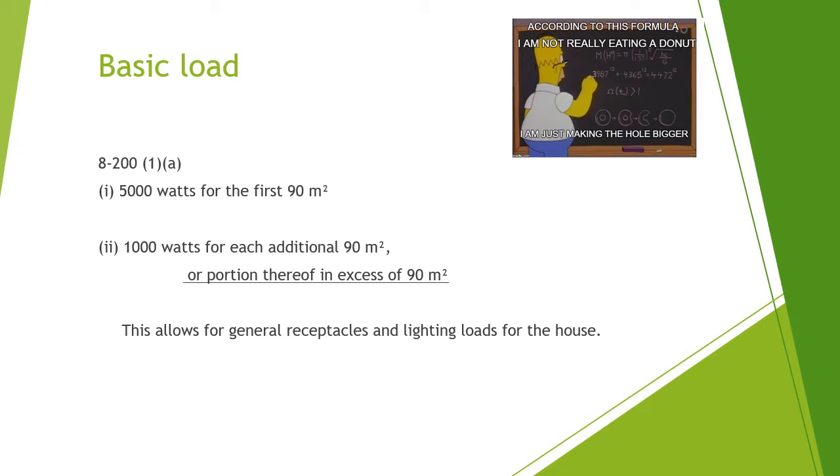When we're calculating the basic load, it is going to be 5,000 watts for the first 90 meters squared, and then we're going to have an additional 1,000 watts for each 90 meters squared or portion thereof in excess of 90 meters squared. This really allows for the general receptacles and lighting loads throughout the house.